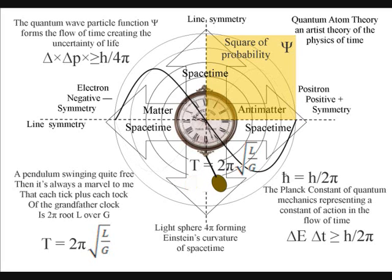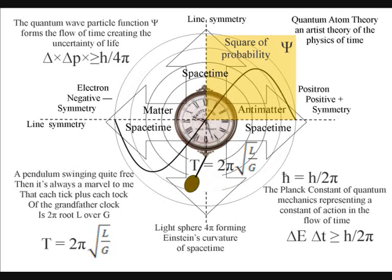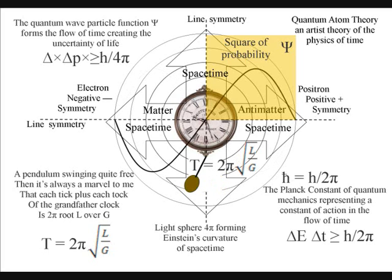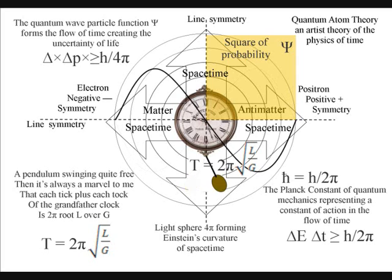The measurement problem of quantum mechanics can be explained if quantum physics represents the physics of time as a physical process. If time is an emergent property, with the future coming into existence with each new light-photon oscillation or vibration.